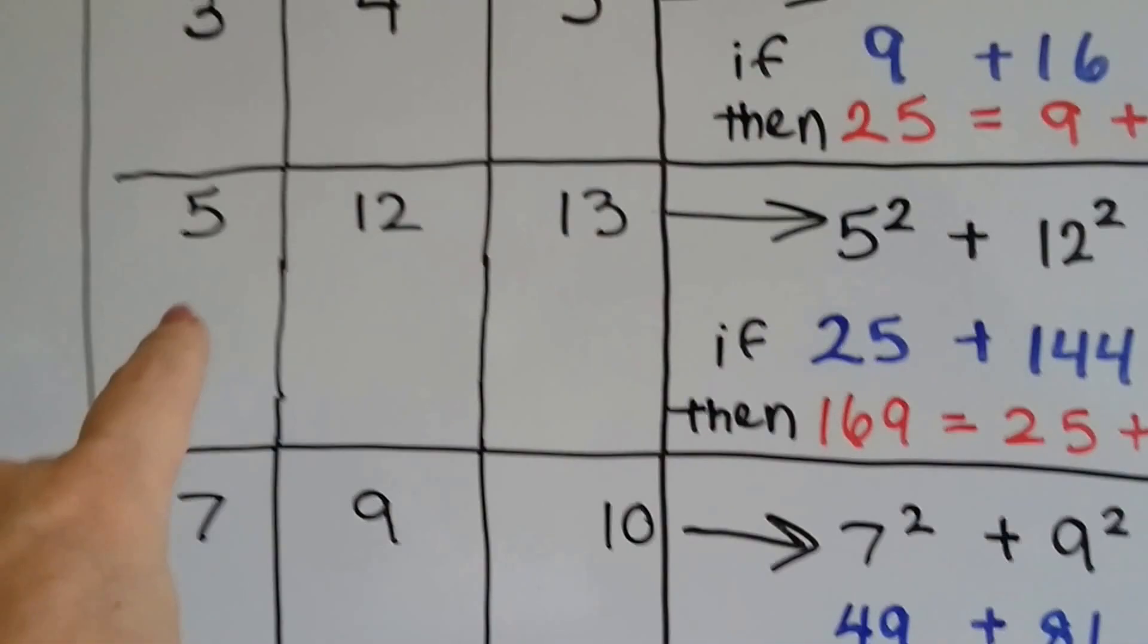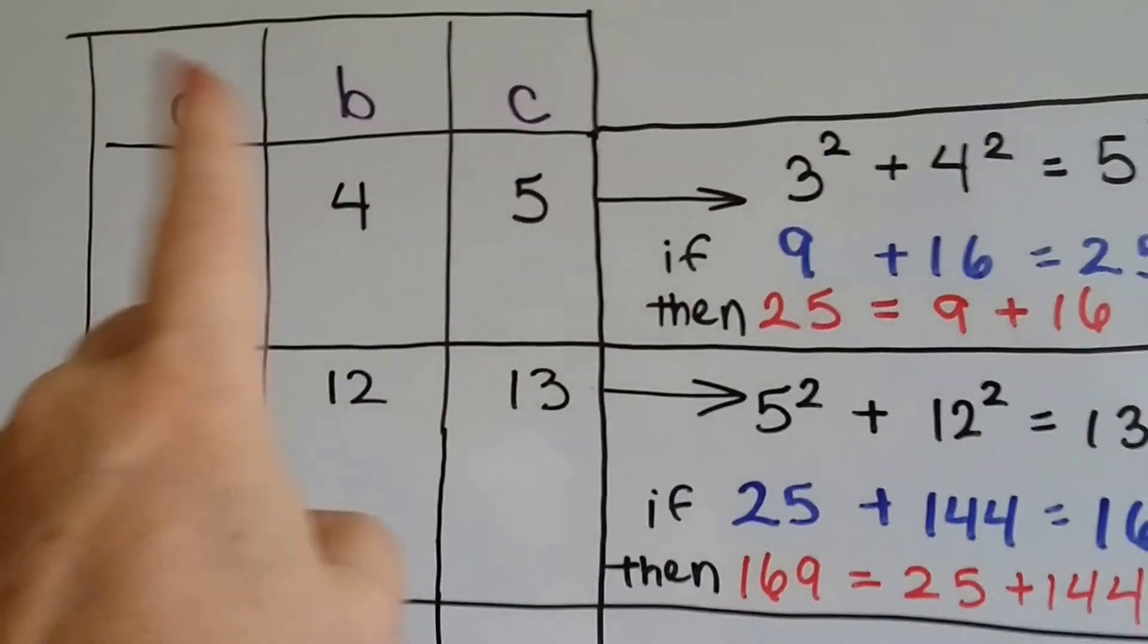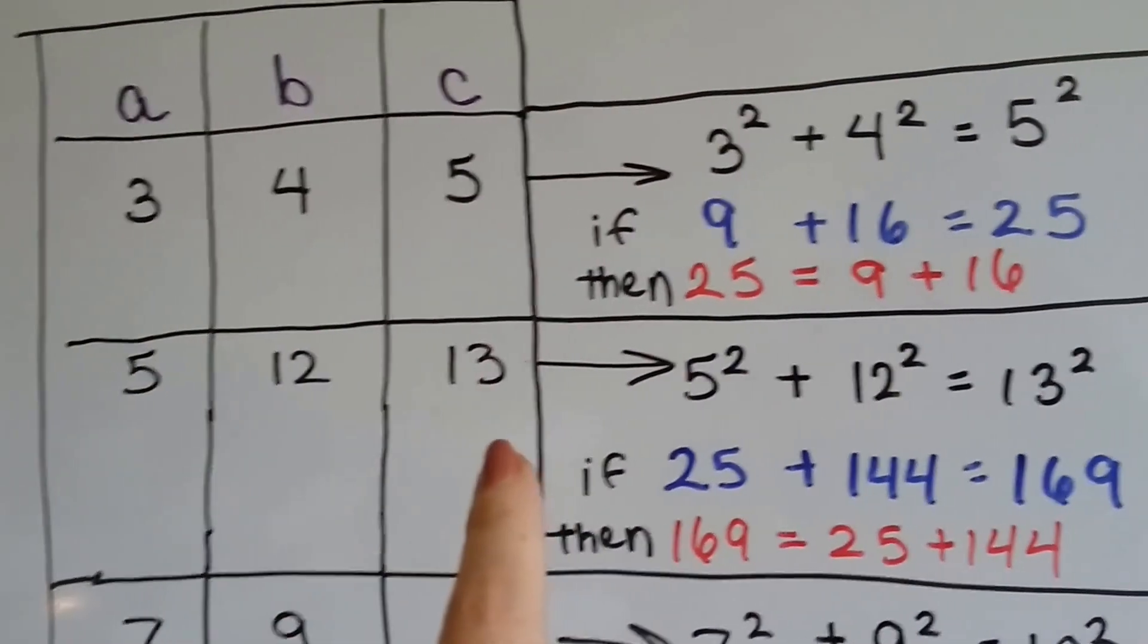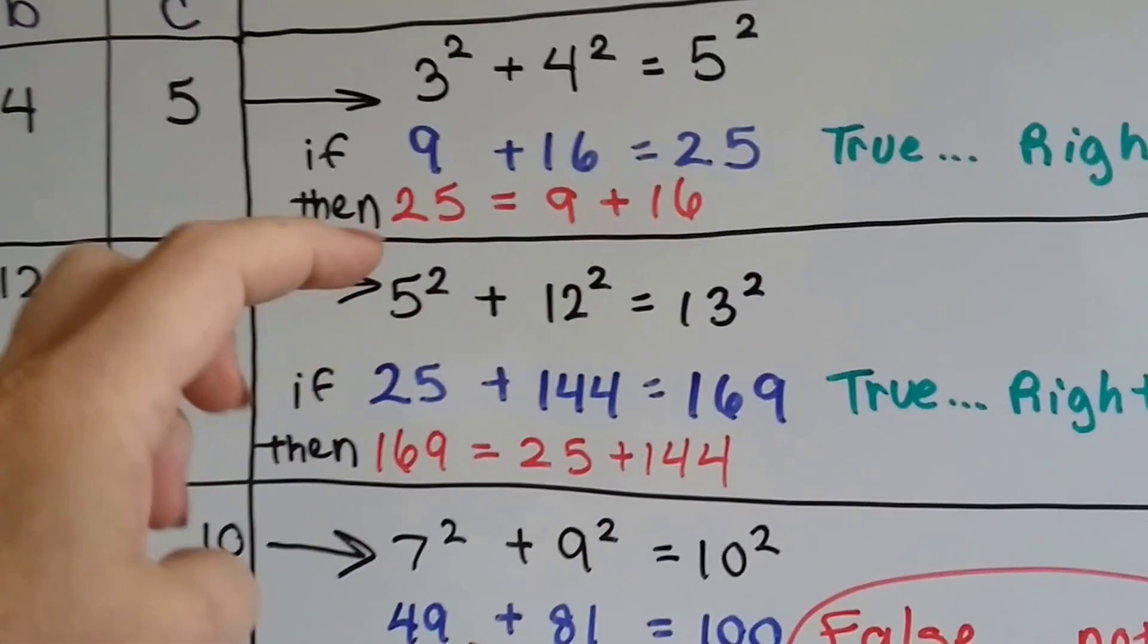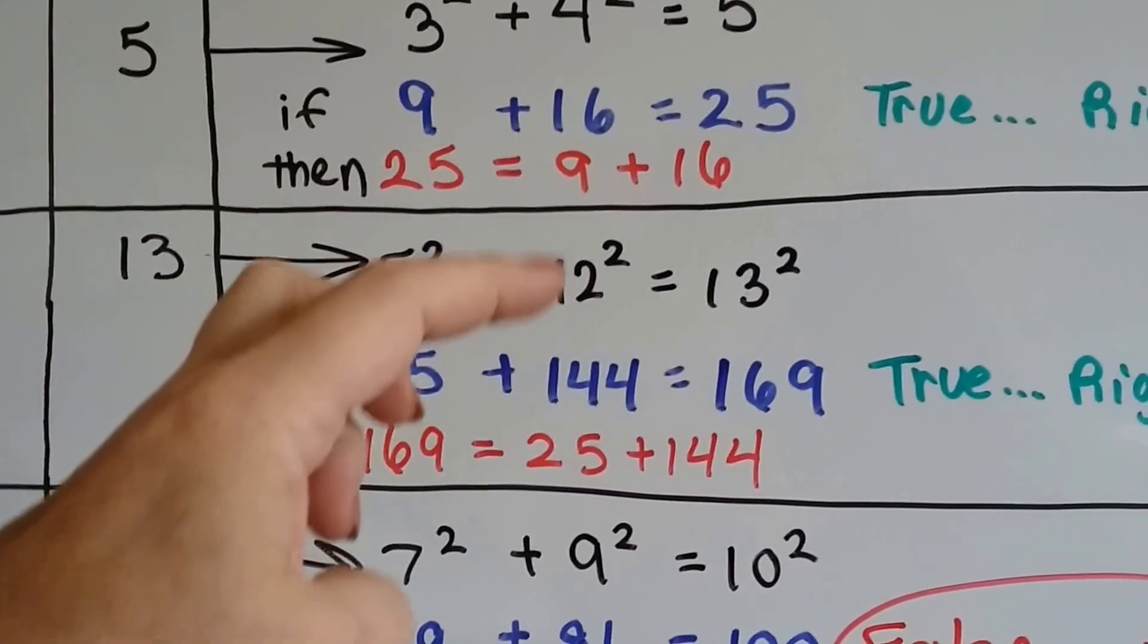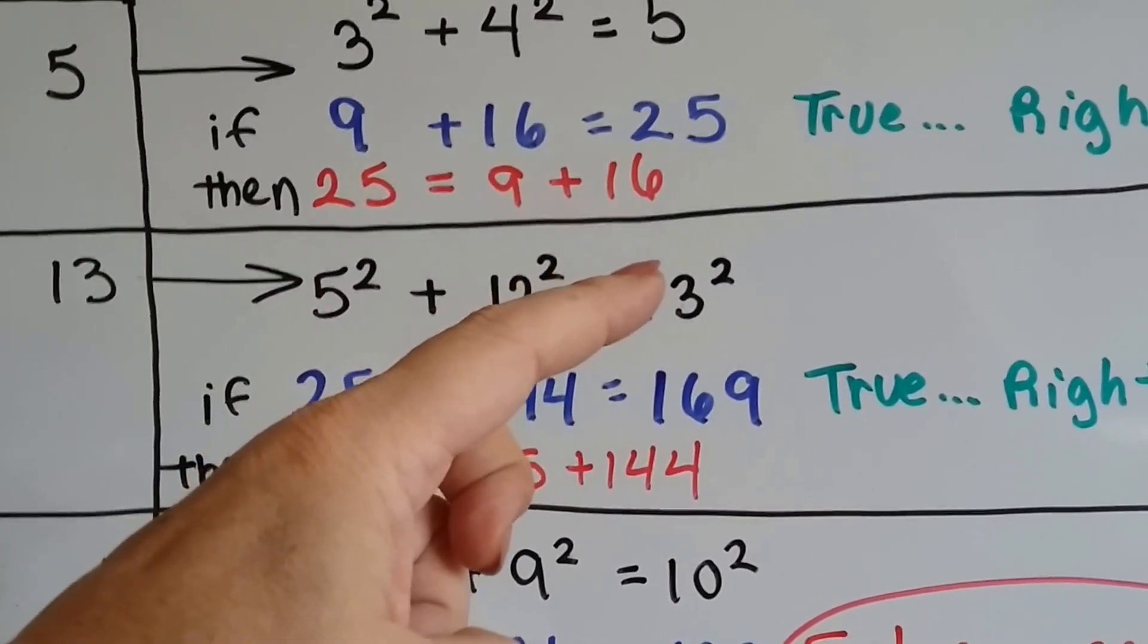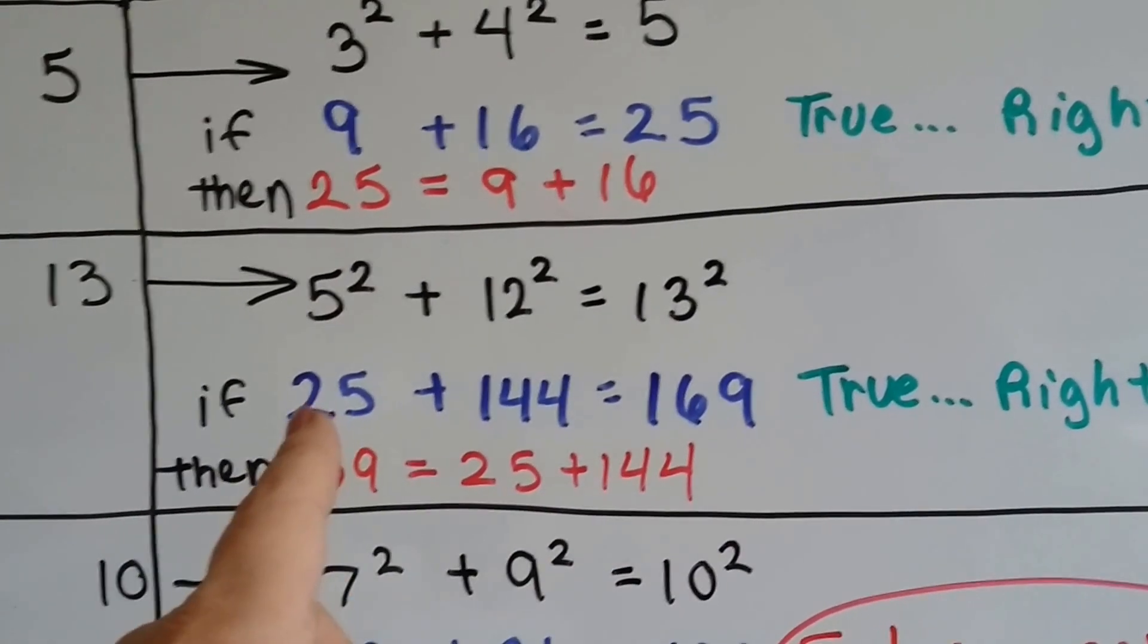Now, if we've got 5, 12, and 13 for a, b, and c, that means 5 times 5 plus 12 times 12 equals 13 times 13. Well, 5 squared is 25, 12 times 12 is 144, and 13 squared, 13 times 13, is 169. And this is true.